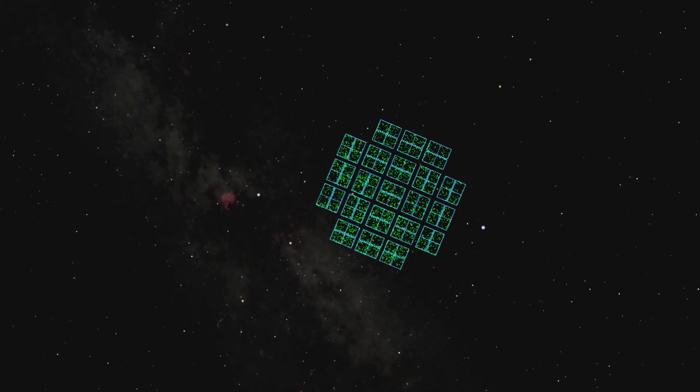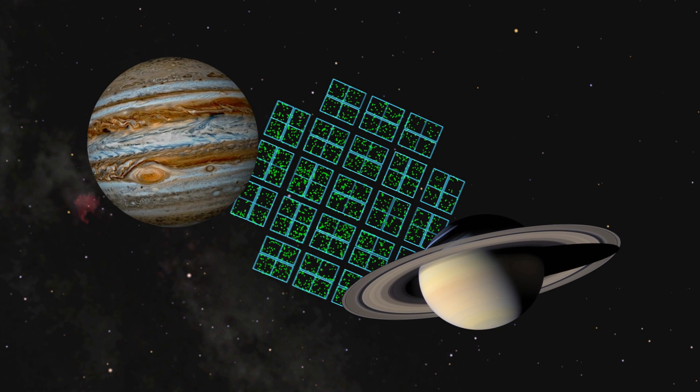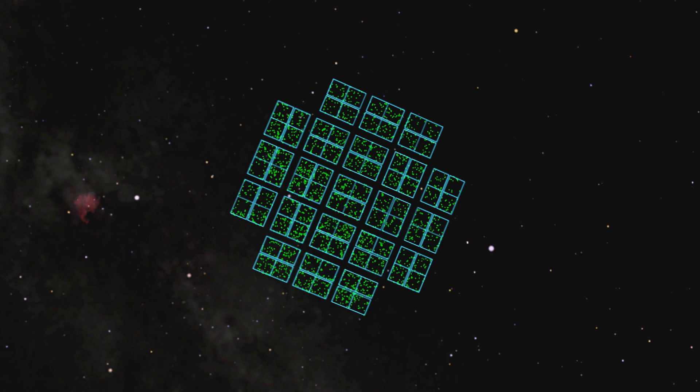These green dots show where possible planets have been discovered so far. Now, this includes giant planets that are nothing like Earth, like Jupiter or Saturn, for example. So, let's remove everything that's twice the size of Earth or more.